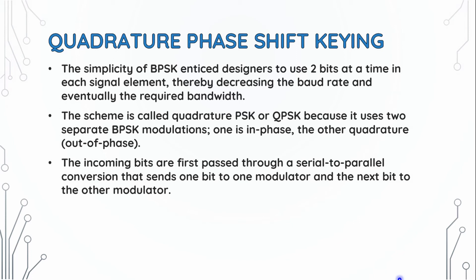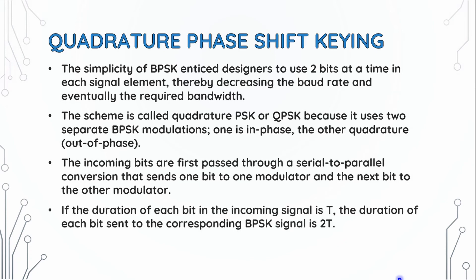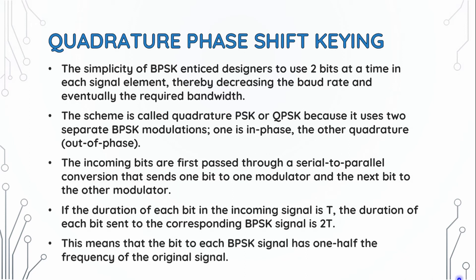In QPSK, incoming bits pass through a serial-to-parallel conversion that sends one bit to one BPSK modulator and the next bit to the other modulator. If the duration of each bit in the incoming signal is T, the duration of each bit sent to the corresponding BPSK signal is 2T. This means each BPSK signal has one half the frequency of the original signal.